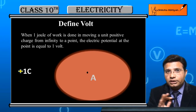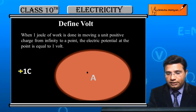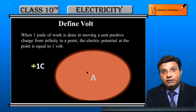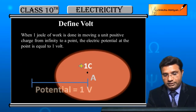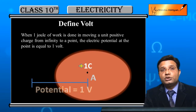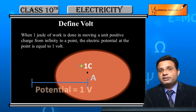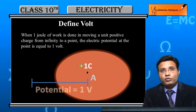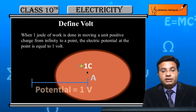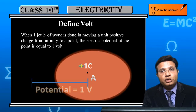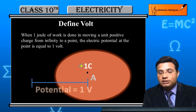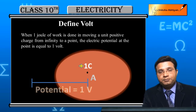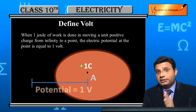C means coulomb — the unit of charge is coulomb. If 1 coulomb of charge is brought from infinity to point A and 1 joule of work is done, then potential is equal to 1 volt. The unit of electric potential is volt, and the definition of 1 volt: when 1 joule of work is done in moving a unit positive charge from infinity to a point, the electric potential at that point is equal to 1 volt. Electric potential is essentially equal to work done.